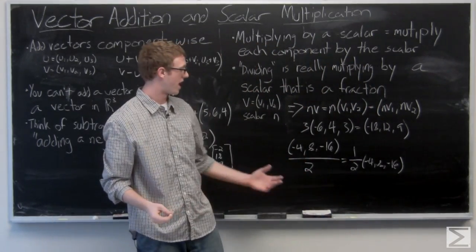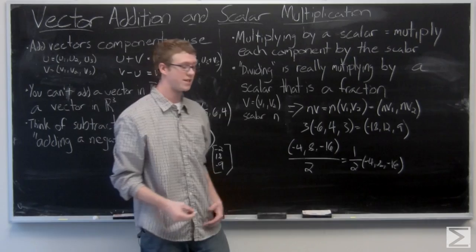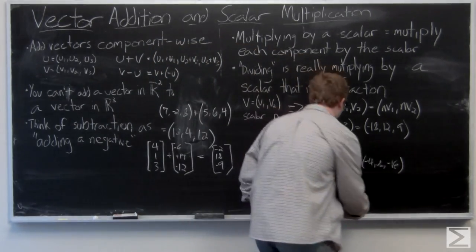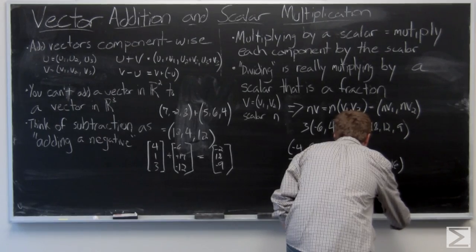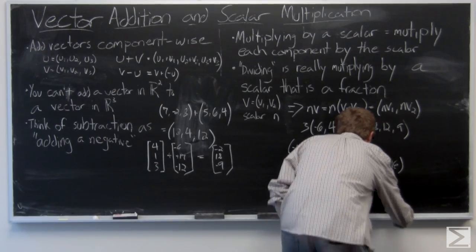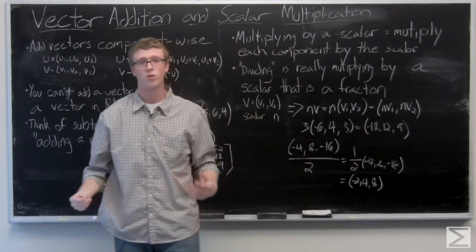It's really just scalar one half times negative 4, 8, 16, and the resulting vector: negative 2, 4, 8.